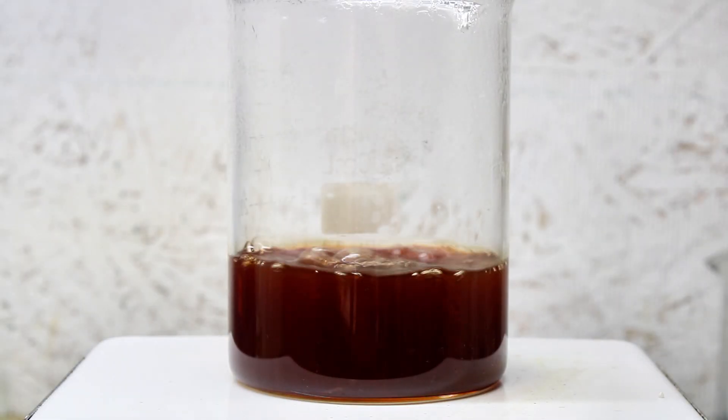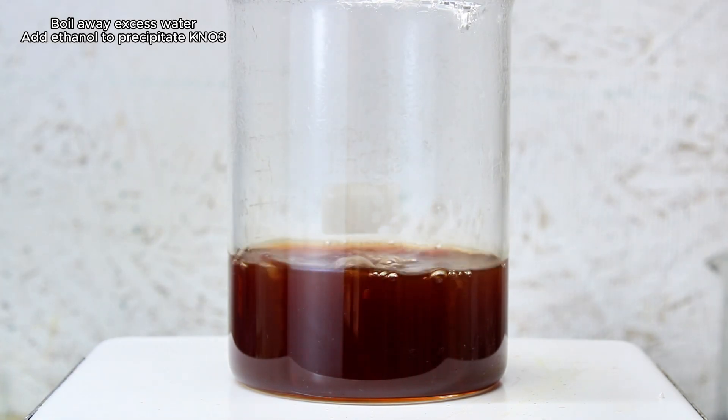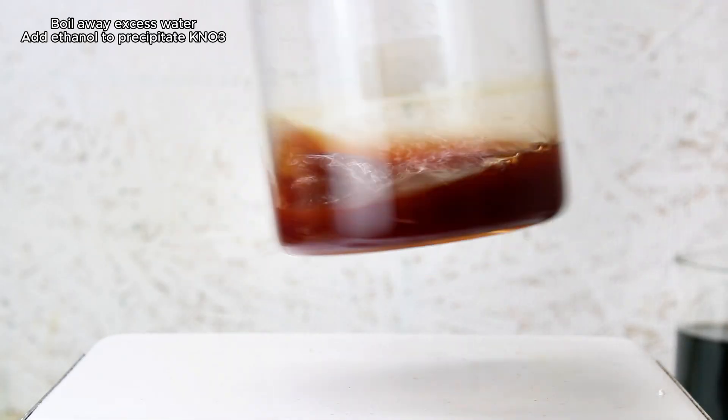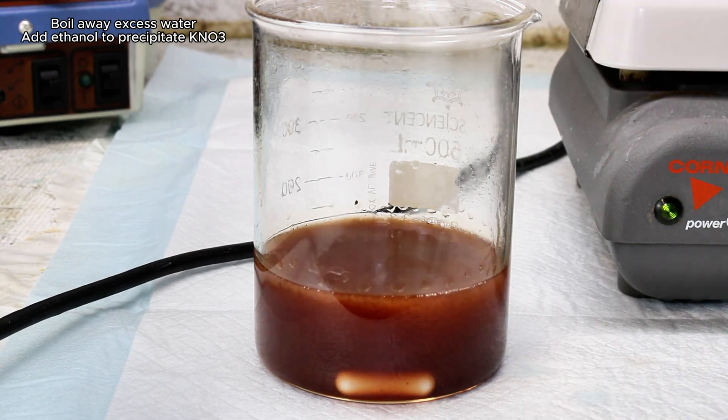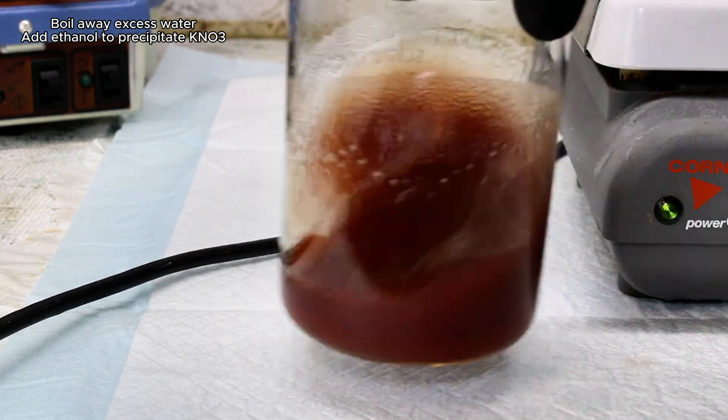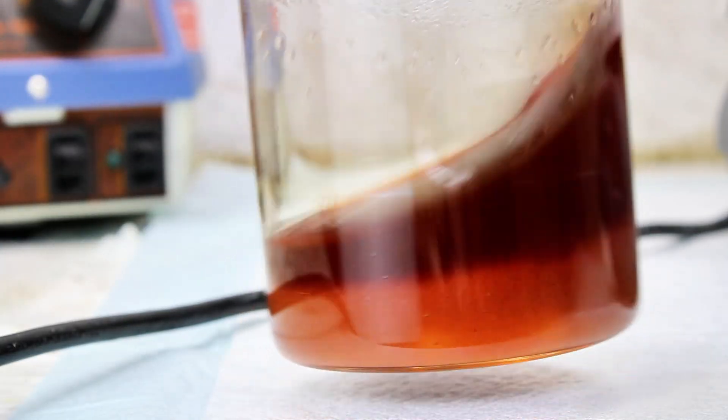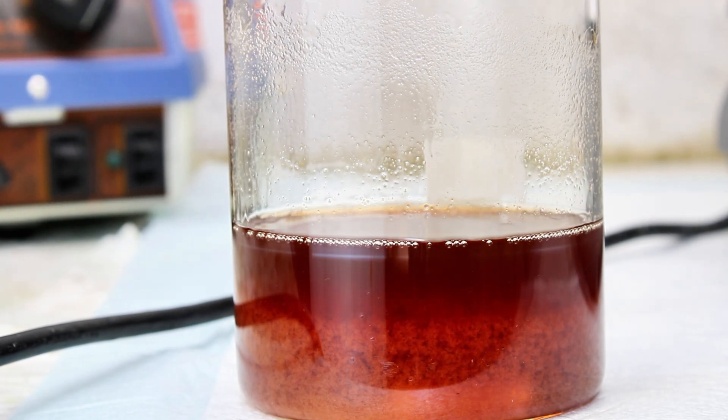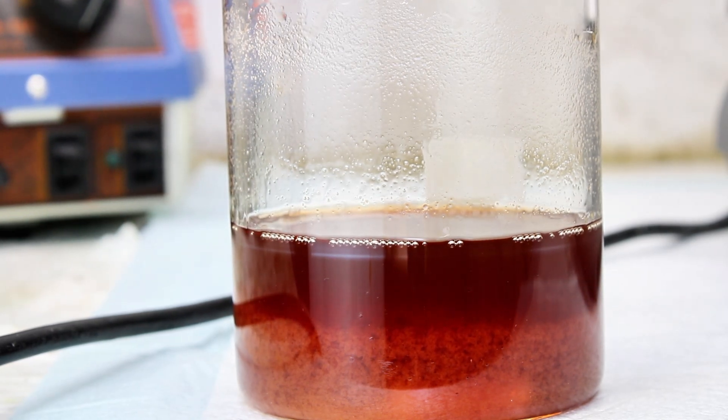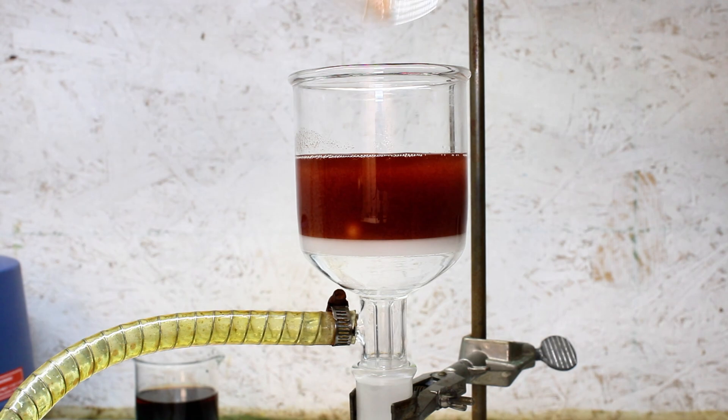The sodium nitroprusside solution was then boiled down to around a fifth of its initial volume, and then I added an arbitrary amount of absolute ethanol to try and precipitate any remaining potassium or sodium nitrate. This was allowed to cool down to zero degrees Celsius, and then vacuum filtered, and the filtrate was then subsequently boiled down again to crystallize the sodium nitroprusside.